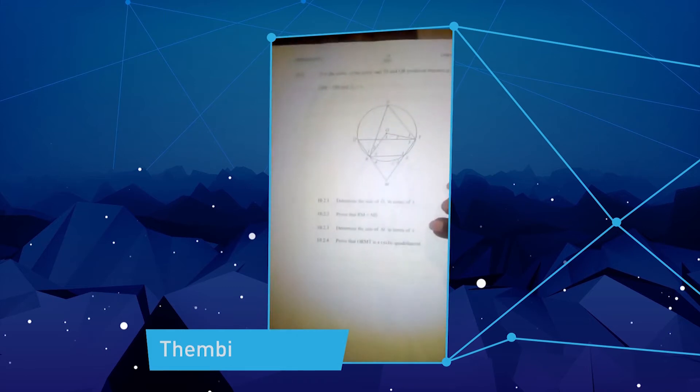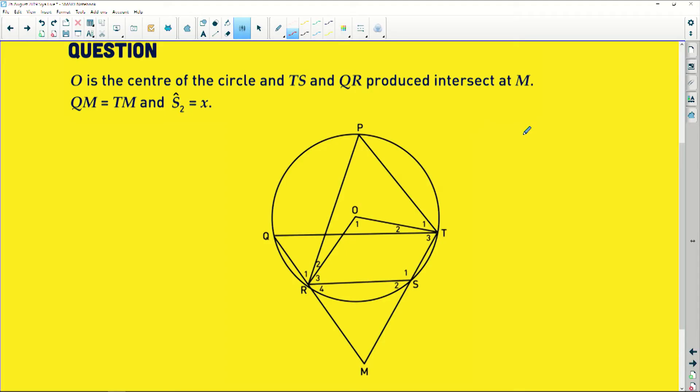Hi, this is Tenbi Mashangu. I would like you to help me with this question right here. Thanks. The question says O is the center of the circle. This is the most important thing they can ever say to you. That being the center, it means I have that and that line being equal to each other because they are equal radii. And then TS and QR are produced, or rather produced intersect at M.